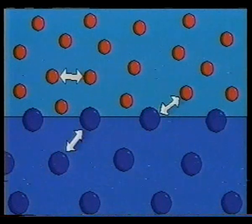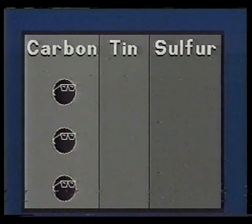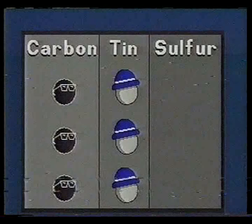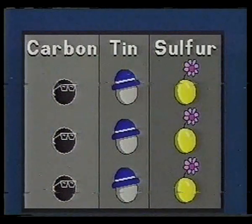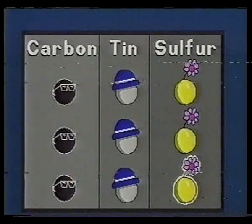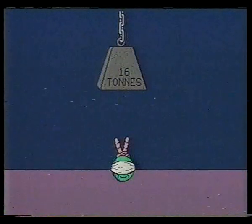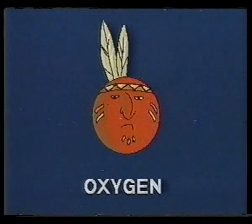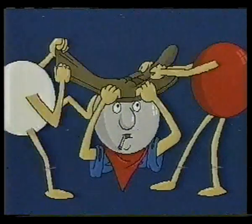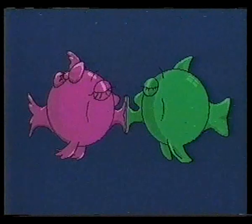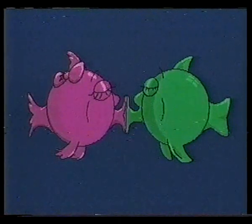Dalton's theories implied that matter was made up of individual particles with spaces between them. He concluded that elements of matter consist of characteristic kinds of particles. The particles or atoms of an element are identical to each other. Atoms are indivisible. There are as many kinds of atoms as there are elements. The atoms of one element cannot be converted into the atoms of another element, and atoms in chemical reactions are neither created nor destroyed, merely rearranged.